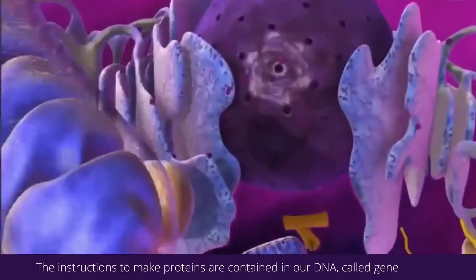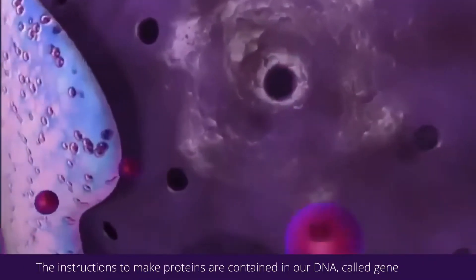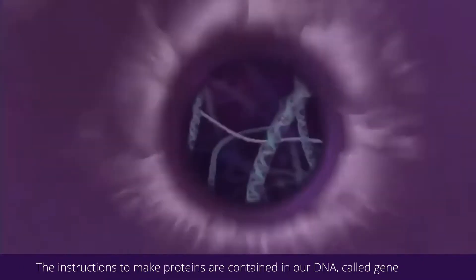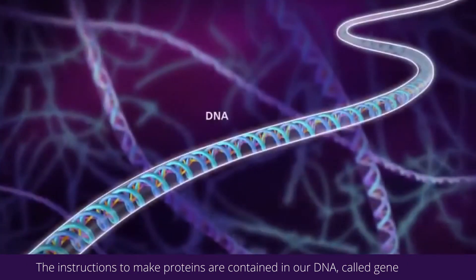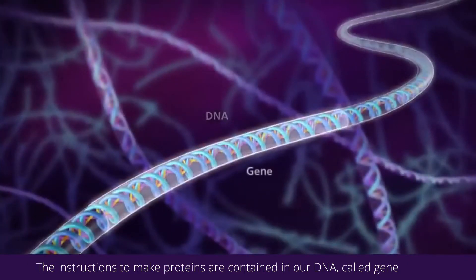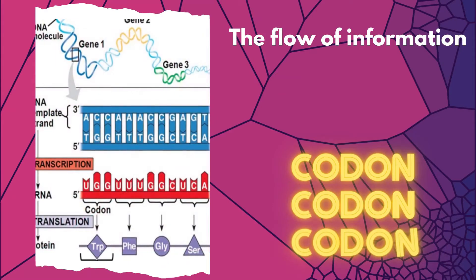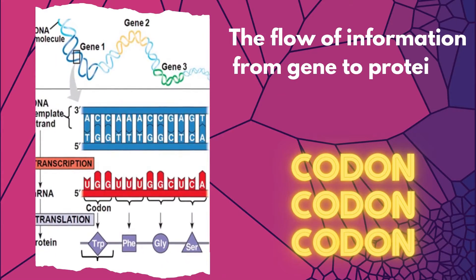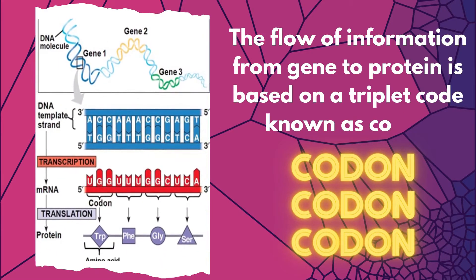The instructions to make proteins are contained in our DNA, called genes. The flow of information from gene to protein is based on a triplet code known as a codon.